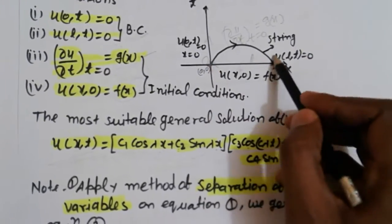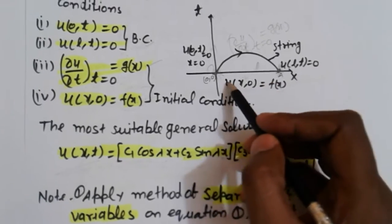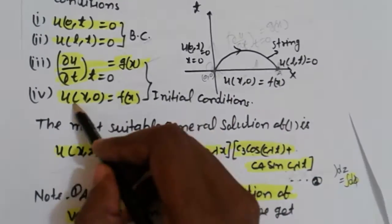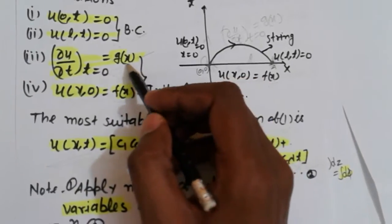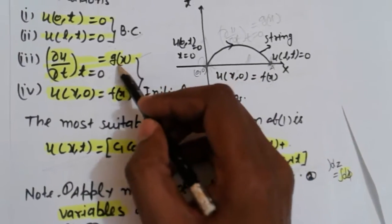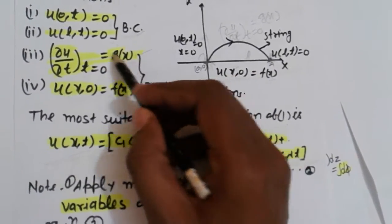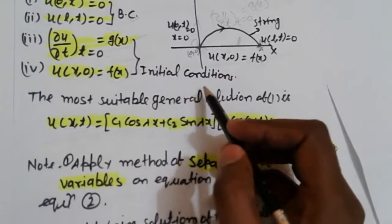Boundary condition u(x,0) = f(x), and ∂u/∂t at t=0 equal to g(x), which are known as initial conditions.